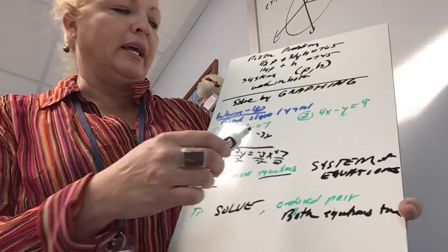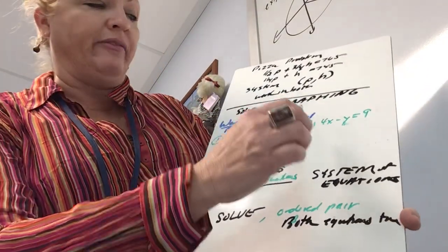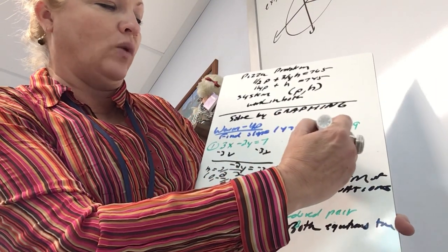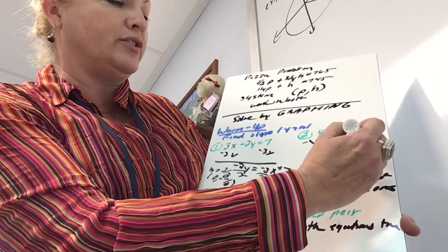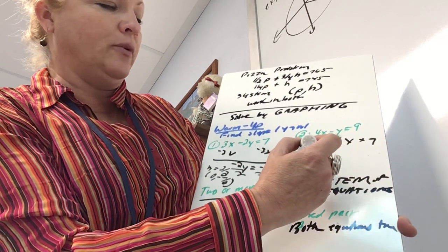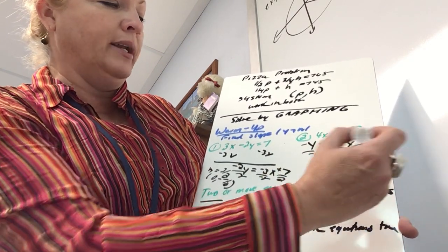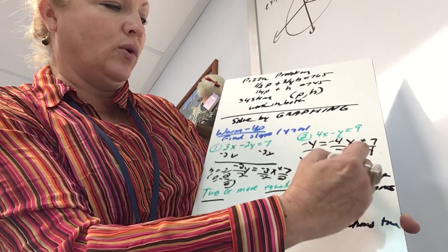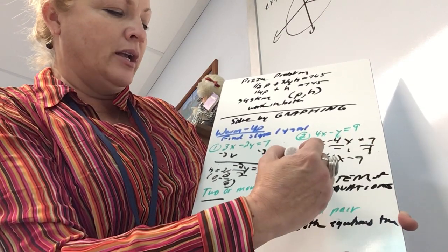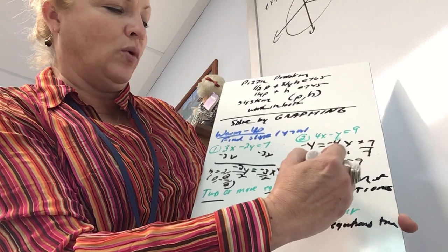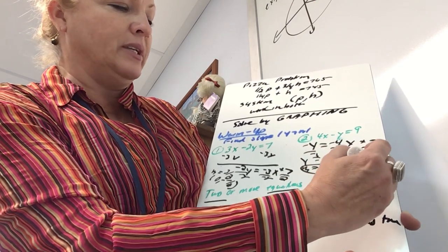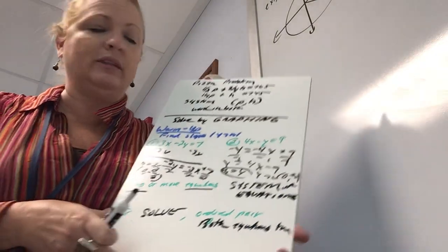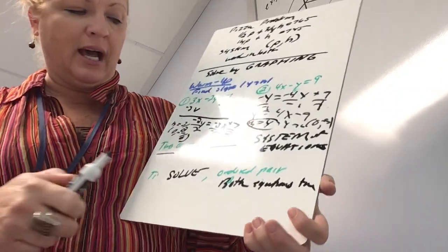We're just naming slope and y-intercept, not graphing yet. For number two, I get y by itself by subtracting 4x, then dividing by negative one. That gives y equals 4x minus 9, so the slope is 4 and the y-intercept is zero, negative nine.